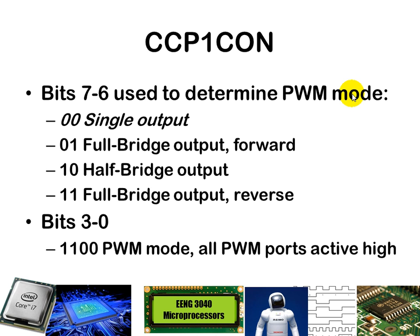CCP1CON determines which mode of pulse width modulation we're going to use. We will be using an H-bridge, but for this simple lab this week we're going to use the single output mode, which just outputs a single pulse width modulated signal. We'll use that to drive a motor forward — we're not going to worry about outputting another PWM signal to drive the motor in reverse on another channel. So inside CCP1CON, bits 7 and 6 should be 0, and bits 3 through 0 will be 1100 for PWM mode.